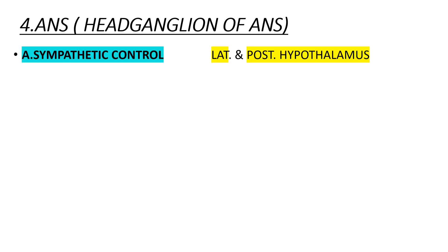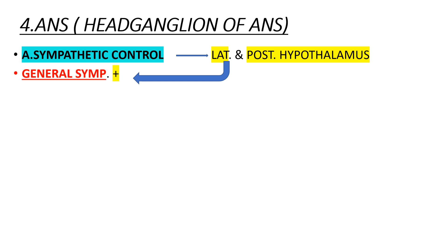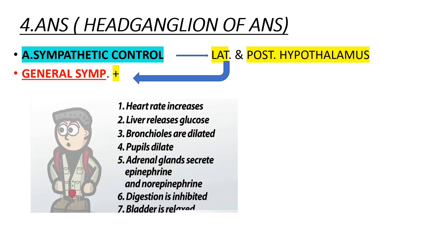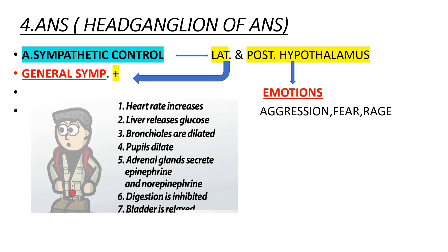The autonomic nervous system has two parts: sympathetic and parasympathetic. Sympathetic control is done by the lateral and posterior hypothalamus. Lateral hypothalamus activation results in general sympathetic activation: heart rate increases, the liver releases glucose for energy, bronchioles dilate, pupils dilate, digestion is inhibited, the bladder relaxes, and the adrenal glands release epinephrine and norepinephrine. Posterior hypothalamus control includes aggression, fear, and rage responses.